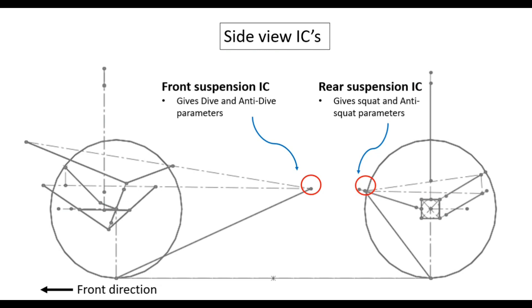Similarly, rear suspension gives us the idea and understanding of squat and anti-squat parameters. When the driver applies throttle or accelerator, the weight of the car shifts to the backside, so the rear suspension will compress. That compression of the rear suspension when the driver applies the throttle is called a squat — the vehicle squats and moves towards the backside. Anti-squat is the resistance to that squatting, which can be done by setting up your suspension geometry in such a way that it resists the squatting motion or backward motion of the car.